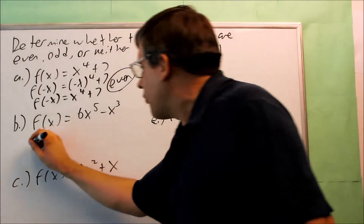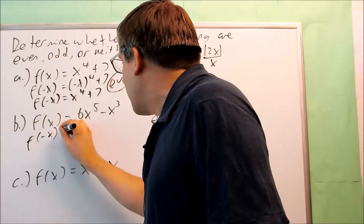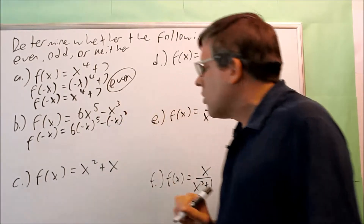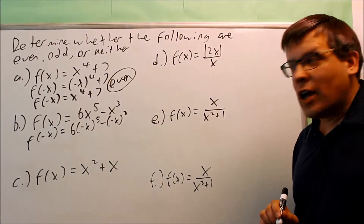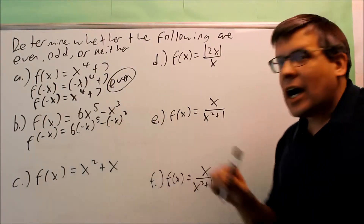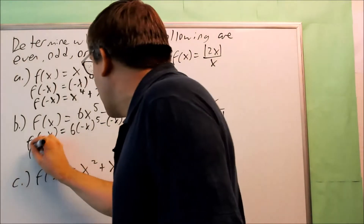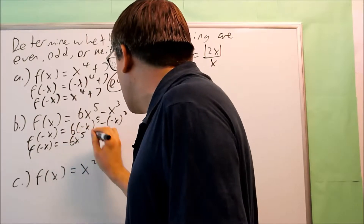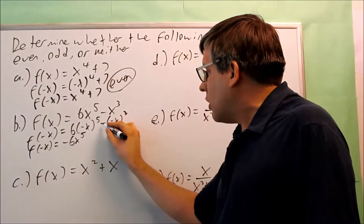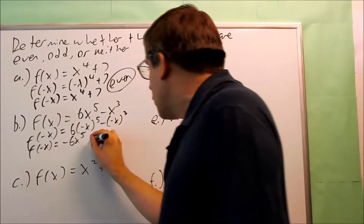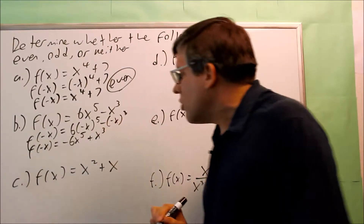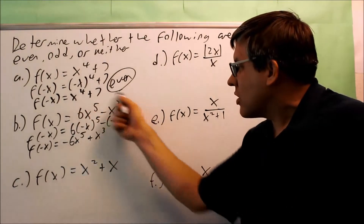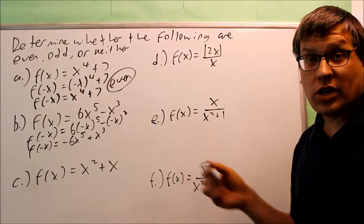Next, for this one, we're finding f of negative x again. We put negative x in for all the x's and simplify. A negative to an odd power is going to remain, so you get f of negative x equal to negative 6x to the fifth. That negative comes out and multiplies by the other negative, giving you a plus, so you get negative 6x to the fifth plus x to the third. It's not equal to the original, so it's definitely not going to be even.